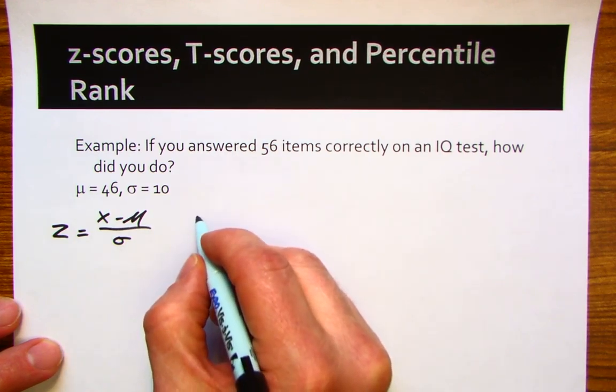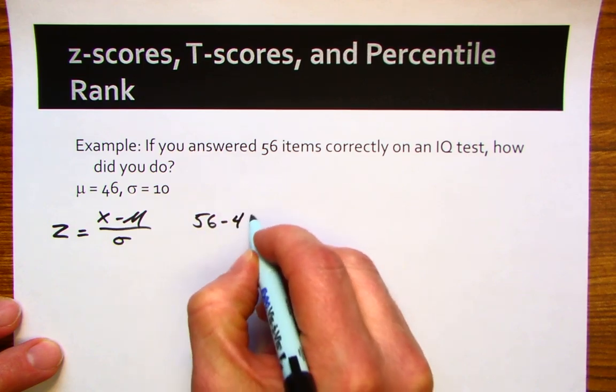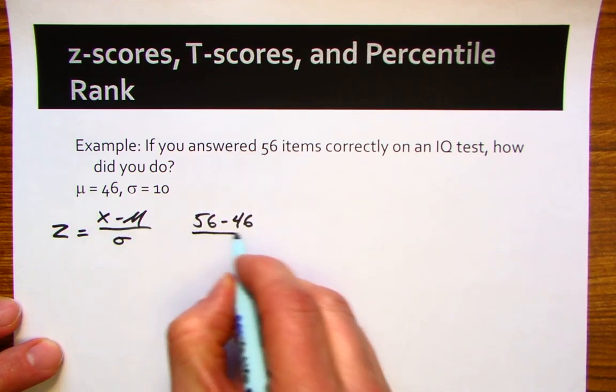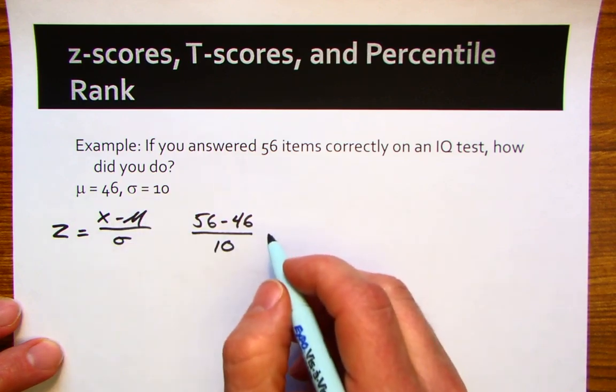In this case, you scored a 56 minus 46, μ, the population mean, divided by 10, which is the population standard deviation.